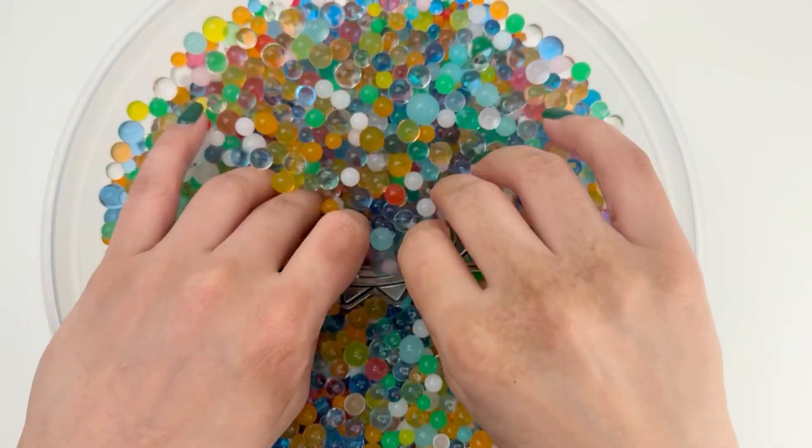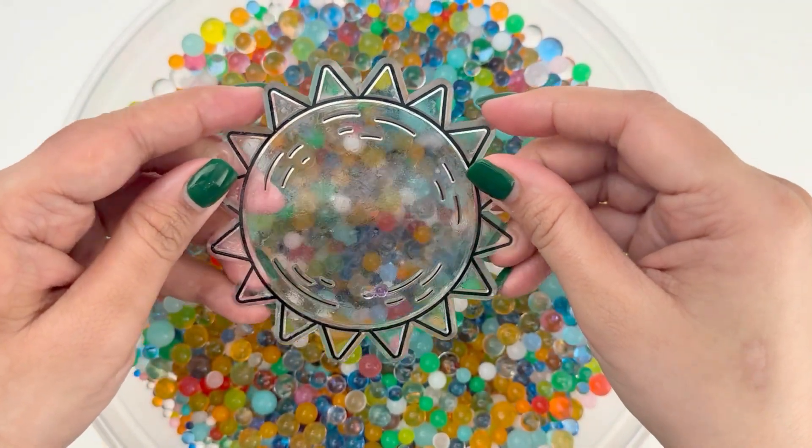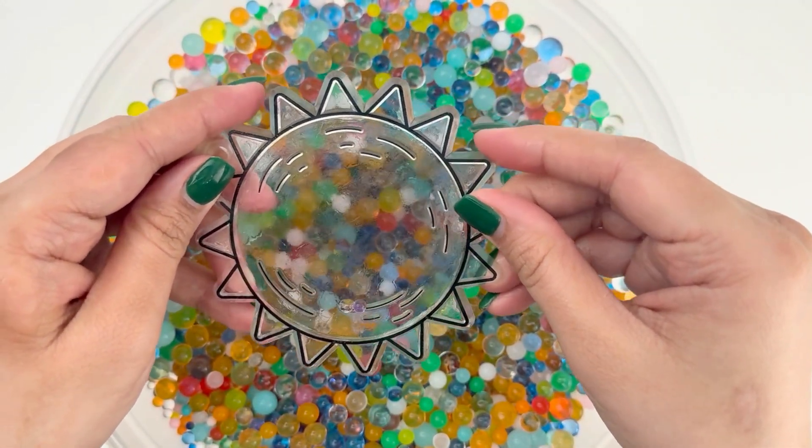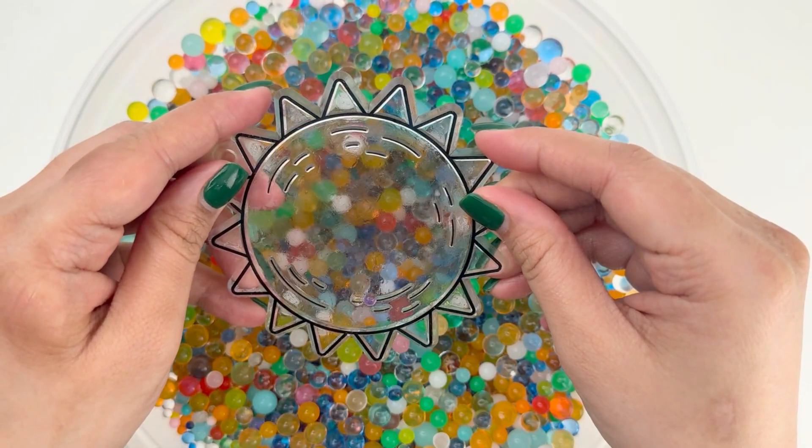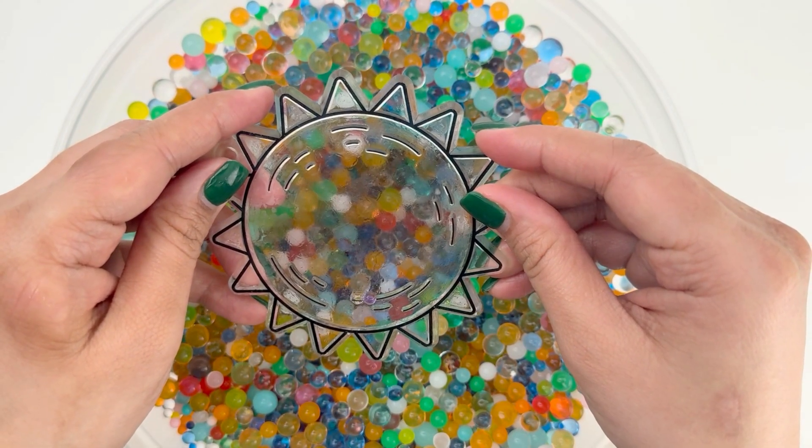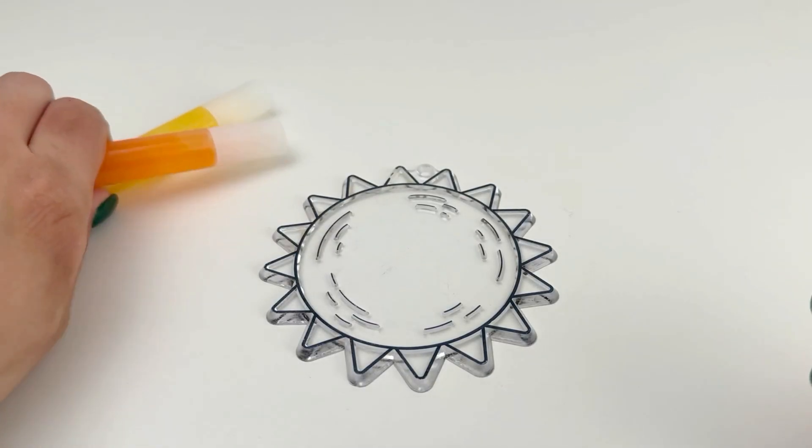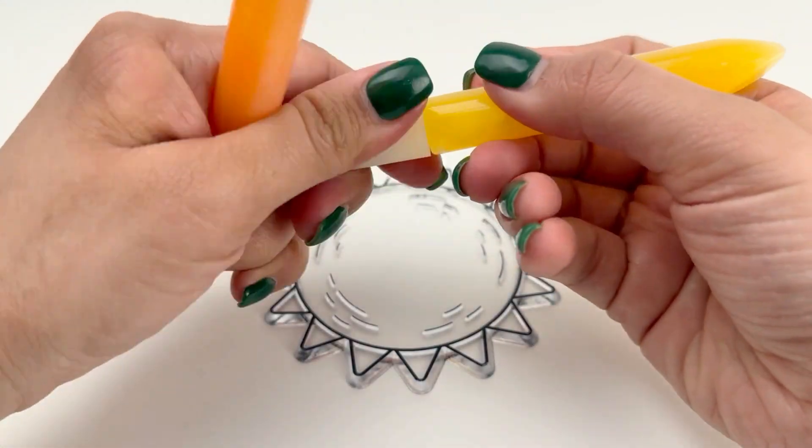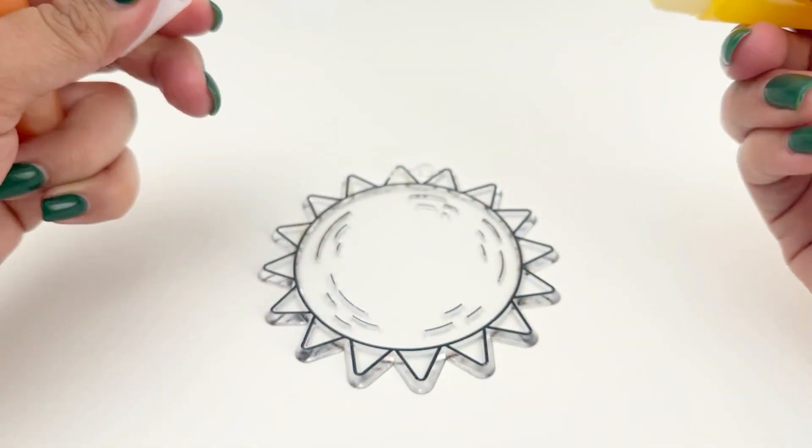Oh, this one feels very big. This must be the sun. But it has no color. Let's give the sun its color back. Sun is bright and shiny. I am going to use yellow and orange.